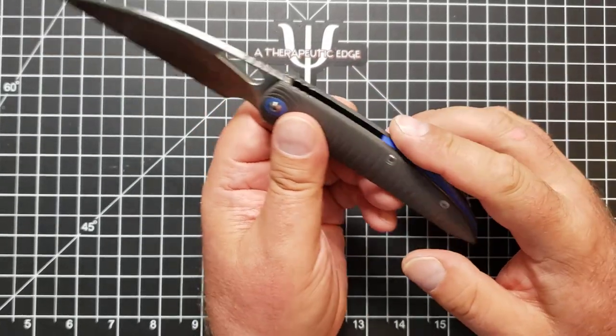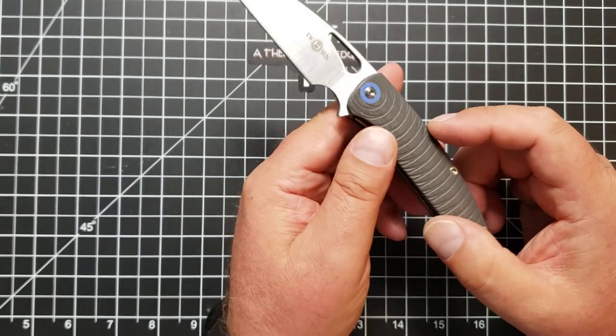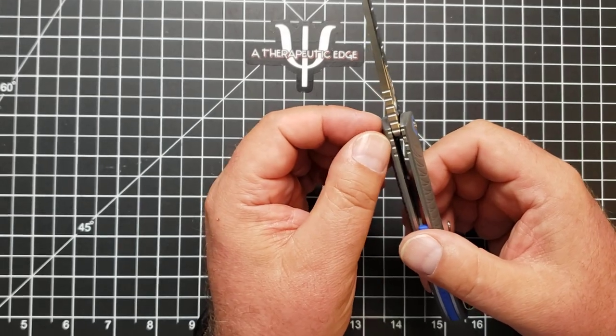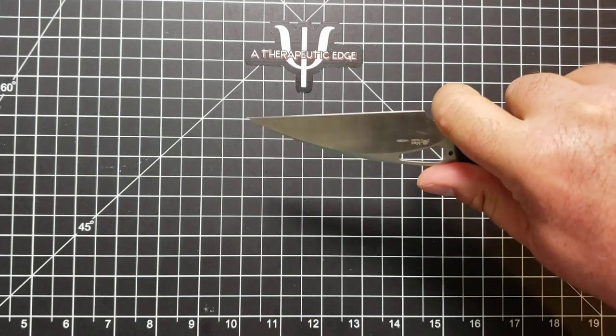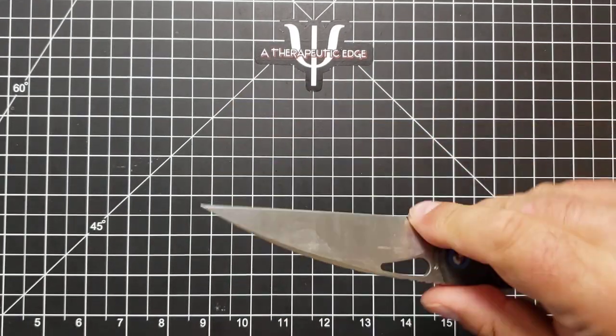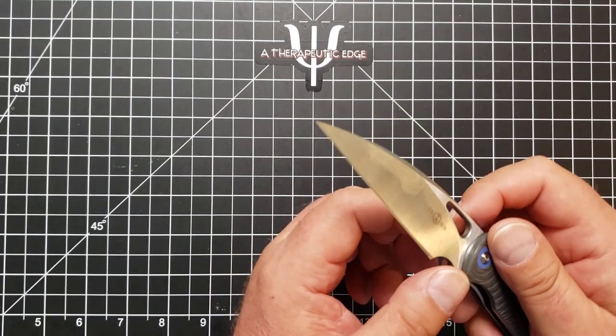It has a little jimping, of course, on the backspacer. None on the lock bar relief or other lock bar itself. And a little bit of jimping on the scales and spine and then on the spine of the blade right where your thumb wants to land. But of course, if you move up to this choil, you're going to move past that. So it is smooth. All the edges are knocked down. There are no sharp edges anywhere on this knife except right where you'd want them.